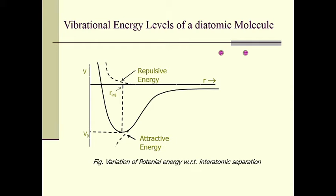In addition, we will also have an attraction between the positively charged ion of one atom and the negatively charged electron of the other atom, and vice versa. So there are these two terms — the attraction term and the repulsion term — and these two terms balance at a point where the bond is formed.